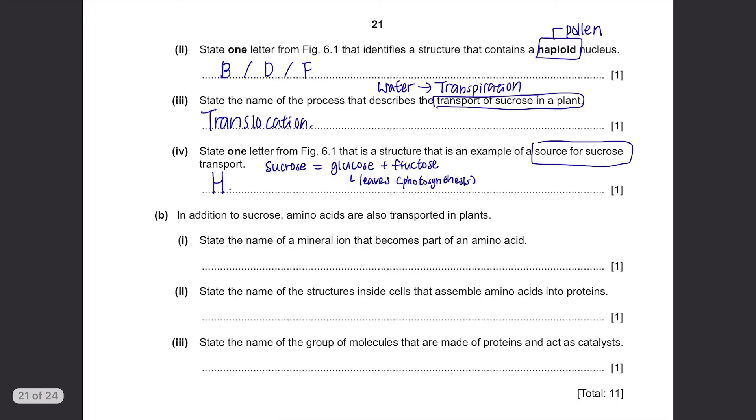Part C. In addition to sucrose, amino acids are also transported in plants. State the name of a mineral ion that becomes part of an amino acid. The mineral ions are the ones that can be found in soil and are taken up by roots so the answer is nitrate ions.